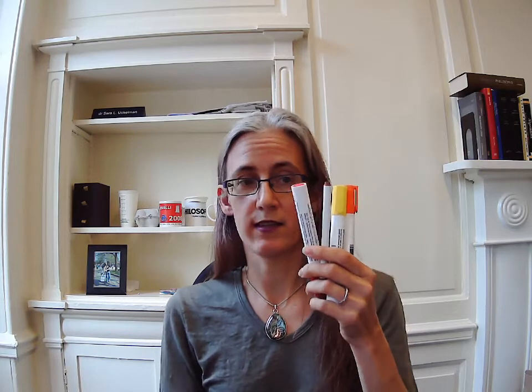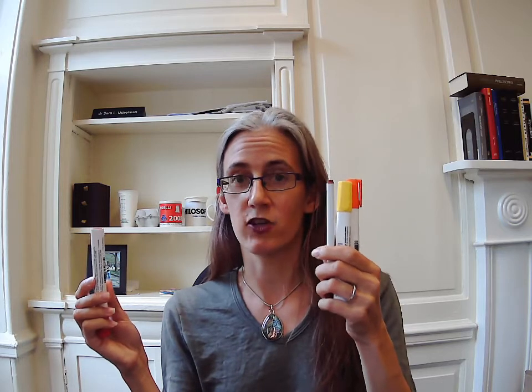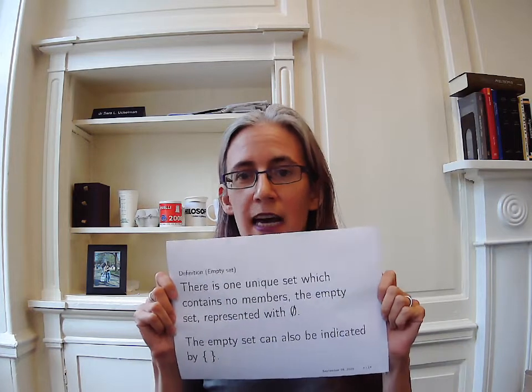Sets are defined by their members. So if I have these four markers I can make many different sets containing them. For instance, there's the set that contains all of them, and this is not the same set as the set that doesn't have the red one, because this set doesn't have the same members as this set. We can also talk about a set that doesn't contain anything. This is a special set — it's unique, it's the only one that doesn't contain anything — and it is called the empty set.